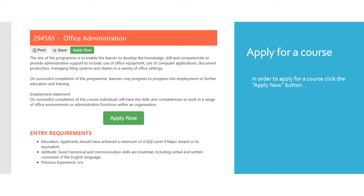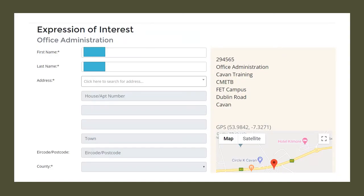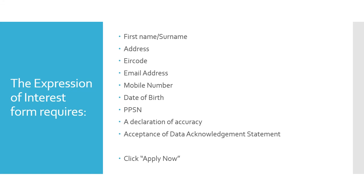In order to apply for the course, click the green Apply Now button. This will bring you to an expression of interest form. It will contain some detail in relation to the course in question and you will have to enter some personal details. The personal details required are your first name and surname, address including Eircode, email address, mobile number, date of birth, your PPSN number, a declaration tick box to confirm that this information is accurate, and an acceptance of data acknowledgement.